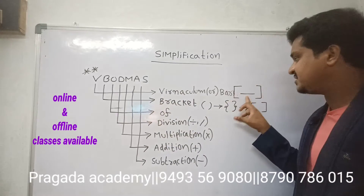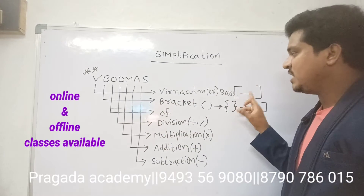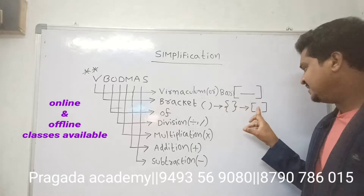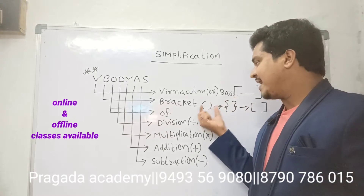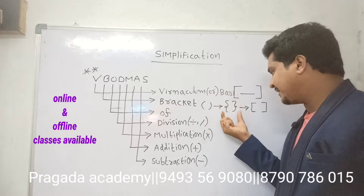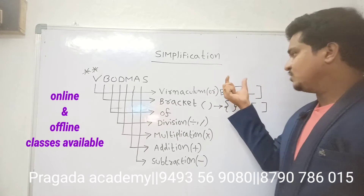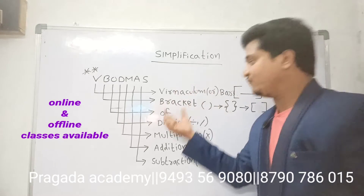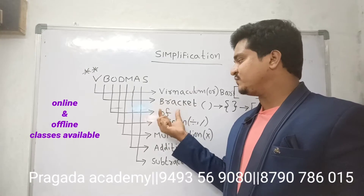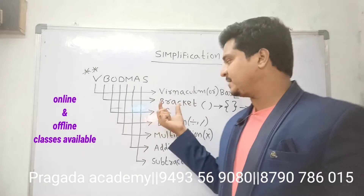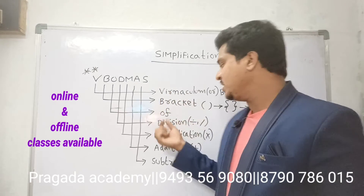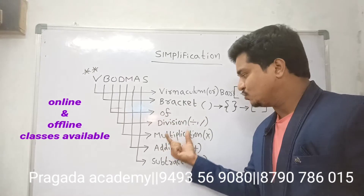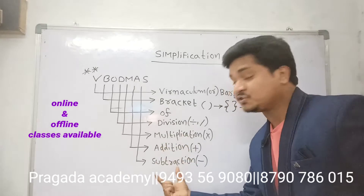In the problems they will mention the bar symbol, so we need to simplify the bar first and then go for the brackets. Brackets include open brackets, curly brackets, and then square brackets. First simplify values in the open brackets, then curly brackets, then square brackets. After that, do 'of' — O-F, which is nothing but multiplication. Then division, then multiplication, then addition, and last subtraction.